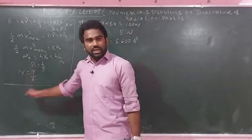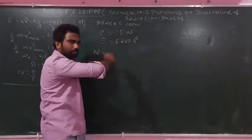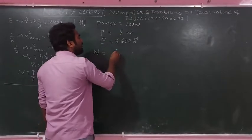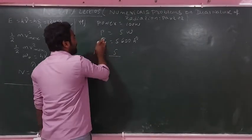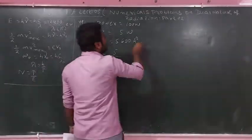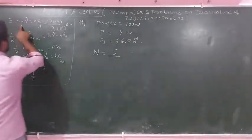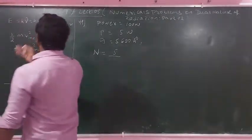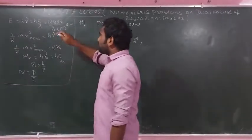The formula to use is: number of photons N = power divided by energy. The energy of each photon is given by E = hν = hc/λ. Here h is Planck's constant 6.626×10⁻³⁴ J·s, c is speed of light 3×10⁸ m/s, and λ is 5600 angstrom.